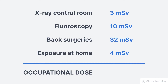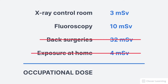Occupational dose includes the dose from the control room — that's 3 millisieverts — and it also includes the dose while working in fluoroscopy, which would be 10 millisieverts. But it does not include dose from background sources in their own home, and it does not include the dose from their own medical procedures. So this healthcare worker's occupational dose for the year is 3 millisieverts plus 10 millisieverts, which equals 13 millisieverts.